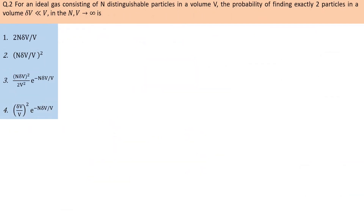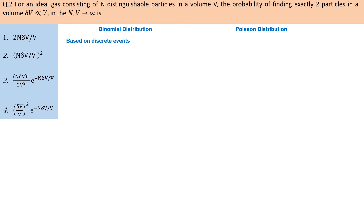For an ideal gas consisting of n distinguishable particles in a volume V, the probability of finding exactly two particles in a volume δV. This question is based on Poisson distribution. The difference is that binomial distribution is based on discrete events, while Poisson distribution is based on continuous events, such as the distribution of gas molecules in a volume.